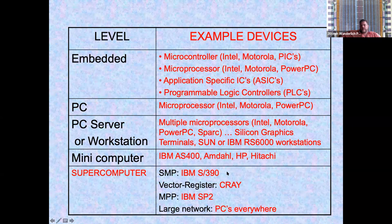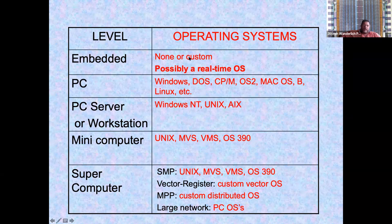The Cray vector register machine was the first to do serious number crunching with vectors — we had a vector register unit patched onto the System 390 that could do the same operations. For operating systems: embedded systems, especially on NASA rovers, want real-time interrupt-driven systems with minimal overhead. PCs run various familiar OS flavors, and servers and minicomputers run Windows, Unix, and various other operating systems.